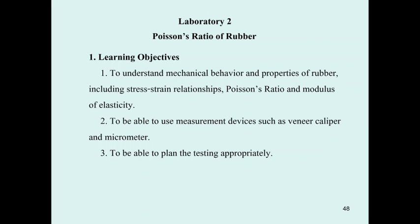Hi students. This is a clip for the laboratory tool on the Poisson ratio of lumber. The learning objective of this lab is to let you understand the mechanical behavior and properties of lumber, including the stress-strain relationship, the Poisson ratio, and the modulus of elasticity. The second objective is to be able to use measurement devices such as the vernier caliper, and third, to be able to plan the testing appropriately.